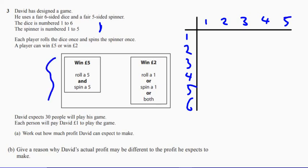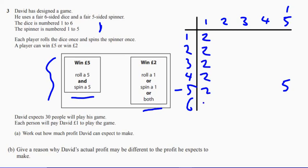And then we look at different outcomes. So each player rolls the dice once, spins the spinner once. The player wins five pounds or two pounds. He wins two pounds if he rolls a five and spins a five — so where does that happen? It happens here. Let's put a five for winning five pounds, and now let's put a two where we win two pounds — two there, two there, two there, two there, and two there, and going across as well. These satisfy all the conditions of winning two pounds.